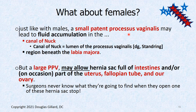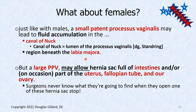If females do have a persistent processus vaginalis, it's given a special name: the canal of Nuck. That's the lumen for the persistent processus vaginalis in females, and it could be a board question. With a large processus vaginalis in females, not only intestines but also the uterus, fallopian tube, and ovary could get sucked down into it.